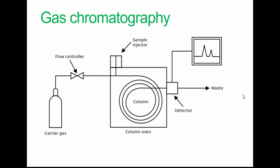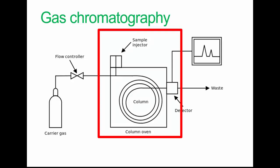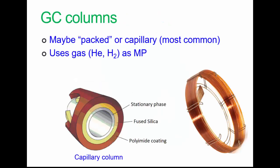There's the guts of the system: the sample injector, the column, and the column oven, and some detector. The column oven is important, and we'll come back to that in a second. We'll talk about the column first. Basically, there are two main types of columns for GC.